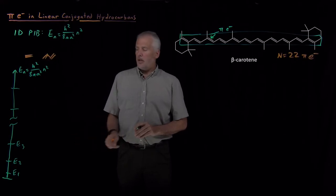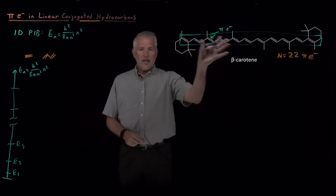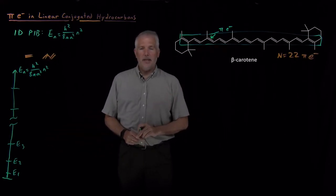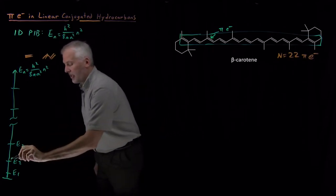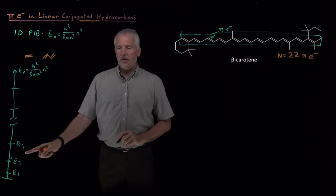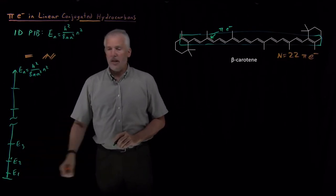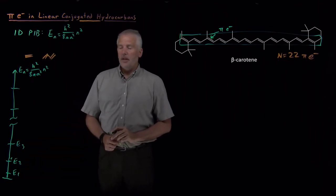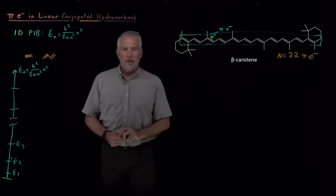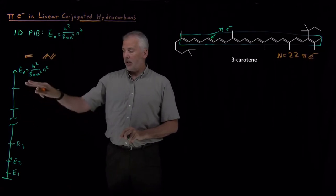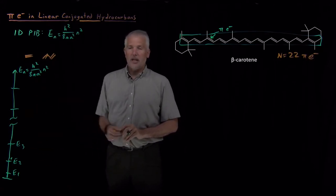In order to be able to predict what color of light is absorbed by the beta-carotene molecule, we need to be able to predict which energy levels these electrons actually occupy. Do they occupy the E2, or the E3, or the E1 energy level? So these 22 electrons that live in the beta-carotene backbone, those pi electrons, which energy levels do they occupy?